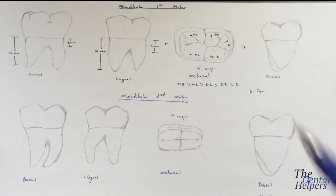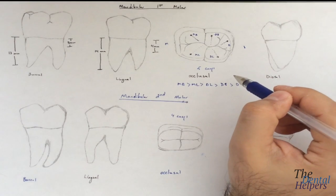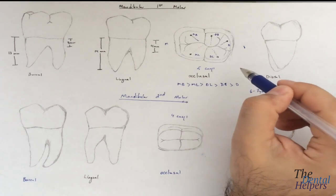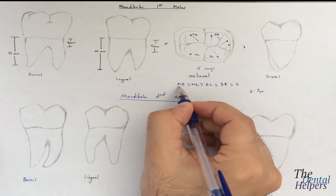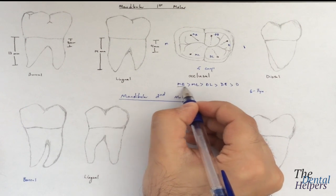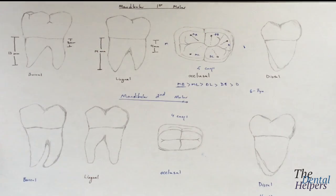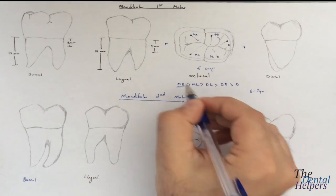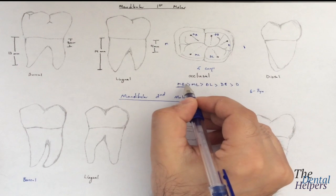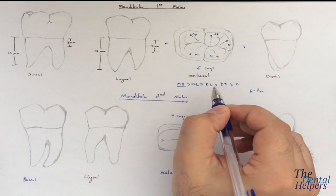I gave you a quick way to remember which is the biggest cusp based on the name. The same thing goes here: in mesial buccal, we have a B, and same with mandibular, we have a B. So just remember, mandibular — because it has a B — the mesial buccal cusp is going to be the biggest cusp. It's the easiest way to remember it.